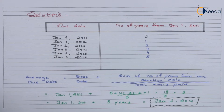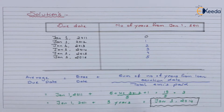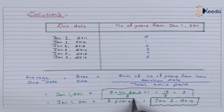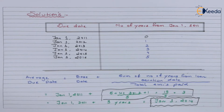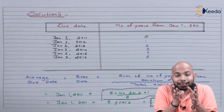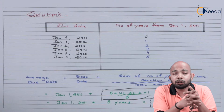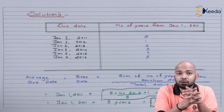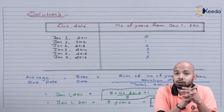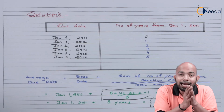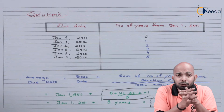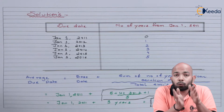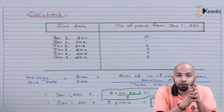The average number of years calculated is three years — that is 15 divided by 5. Adding three years to the base date of 1st January 2011 gives an average due date of 1st January 2014. That is the average due date by which payment of all dues should be made. Now let's figure out the interest calculation.